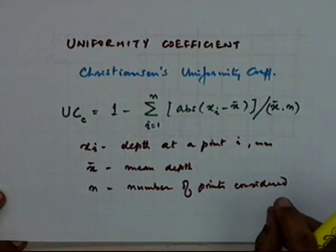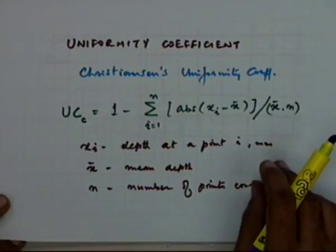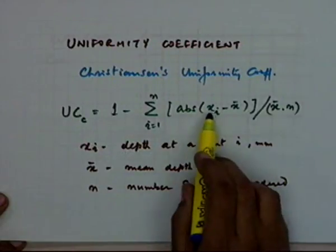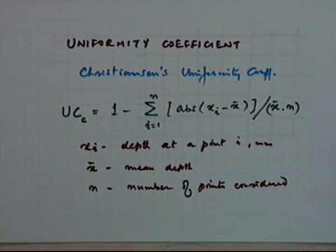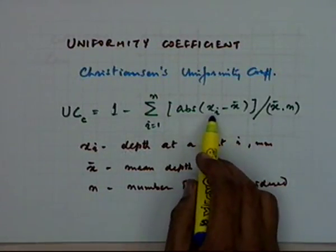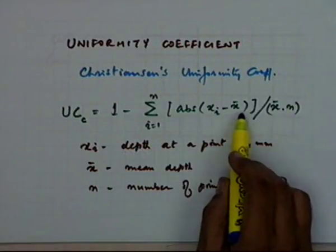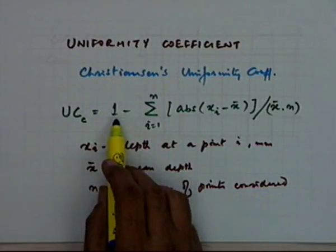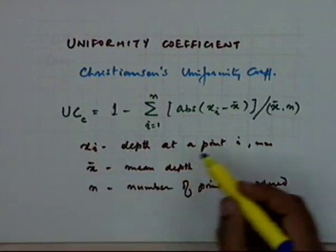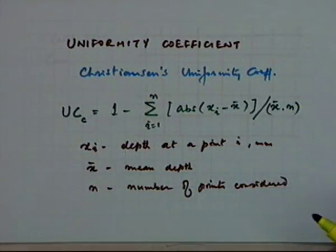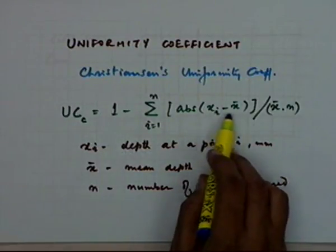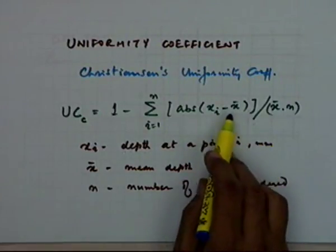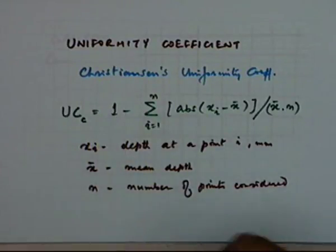The relationship measures the deviation of each individual depth observation from the mean, and uniformity is assessed on the basis of that deviation. The higher the deviation, the lower the uniformity. If all catch cans collect the same amount, every observation equals the mean and uniformity is 100 percent. If deviations are very high, the uniformity coefficient decreases.